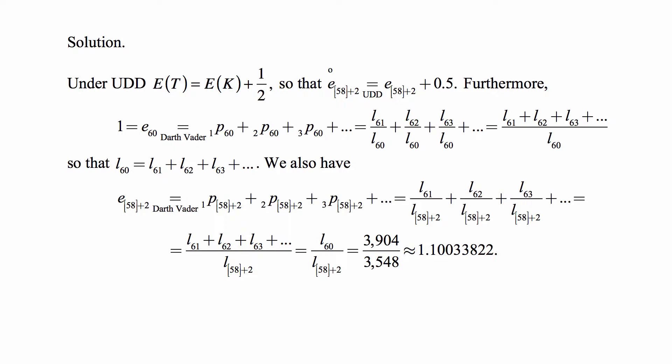That is L₆₁/L₆₀ + L₆₂/L₆₀ + L₆₃/L₆₀ and so on, which is simply the sum of L₆₁ + L₆₂ + L₆₃ and so on, all the population sizes for future ages divided by L₆₀. Which means that L₆₀ is equal to the sum of L₆₁ + L₆₂ and so on.